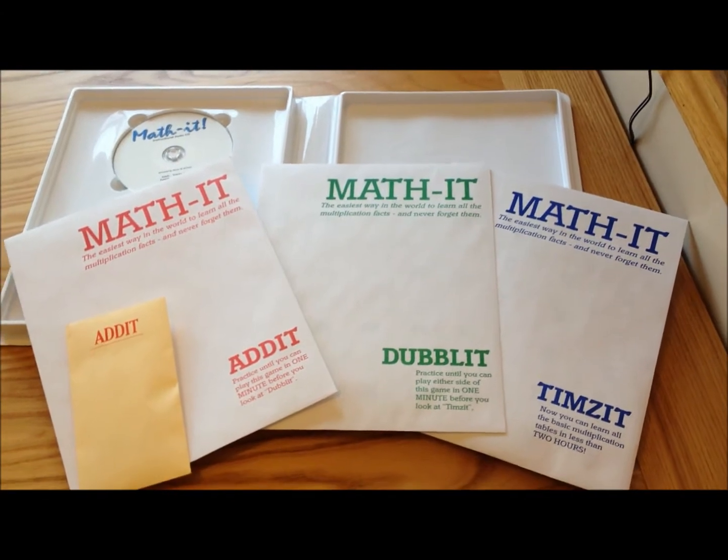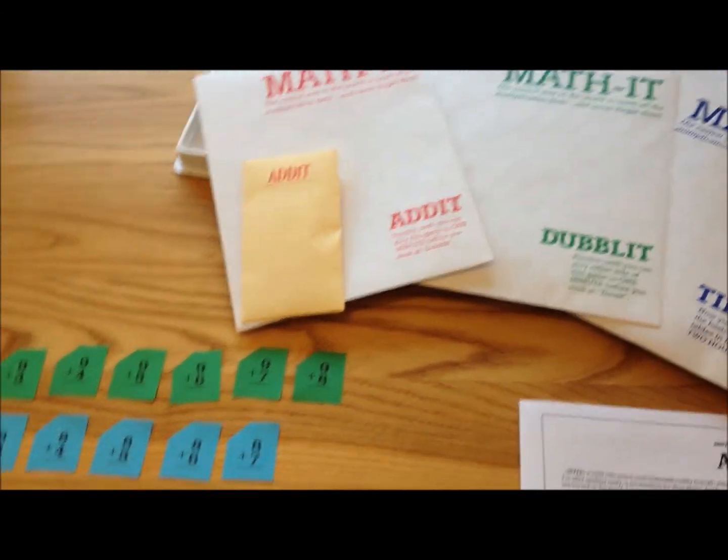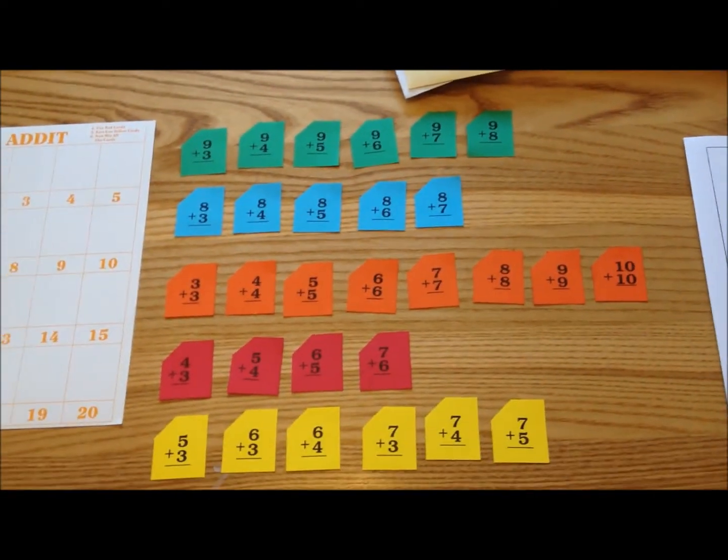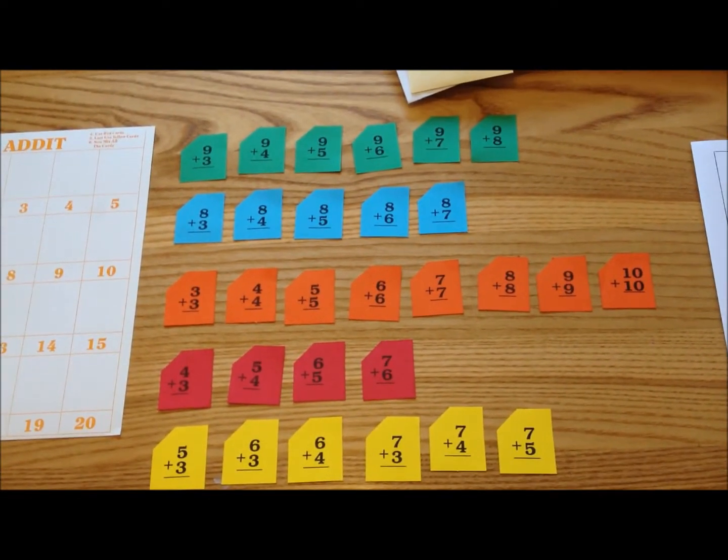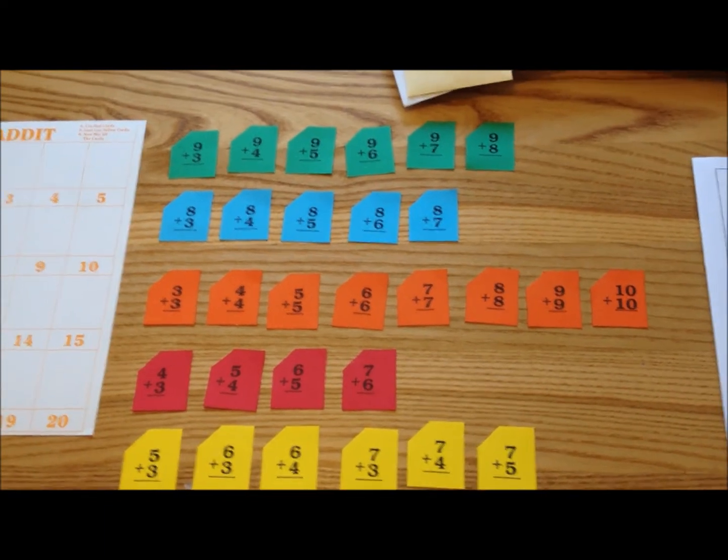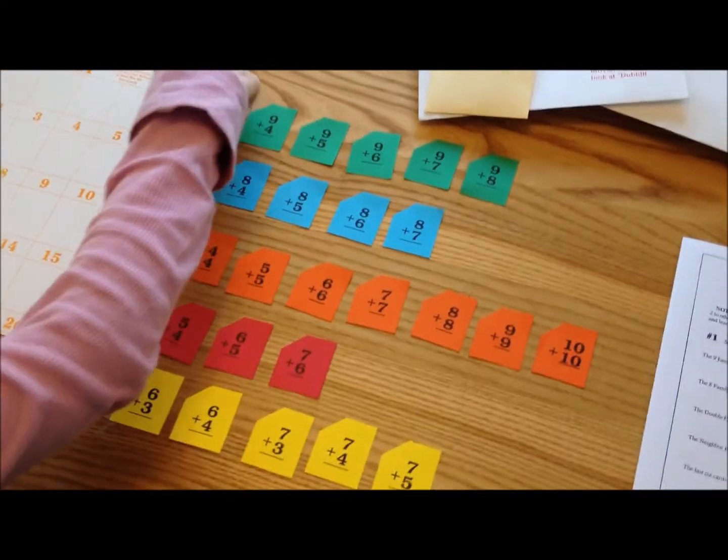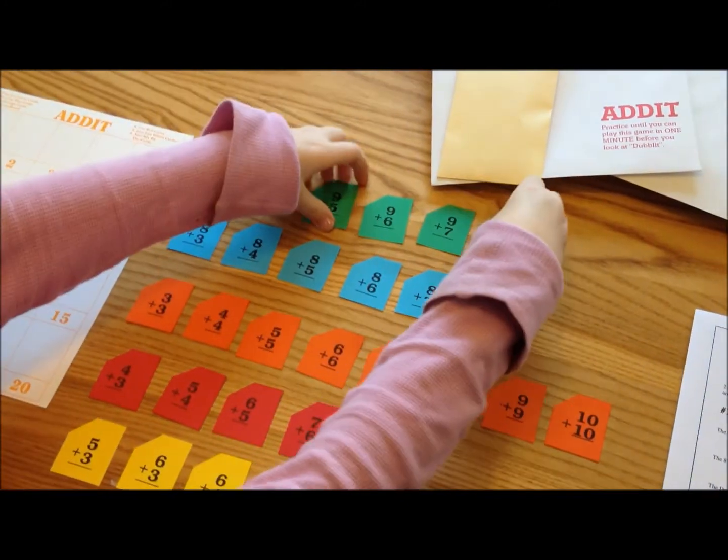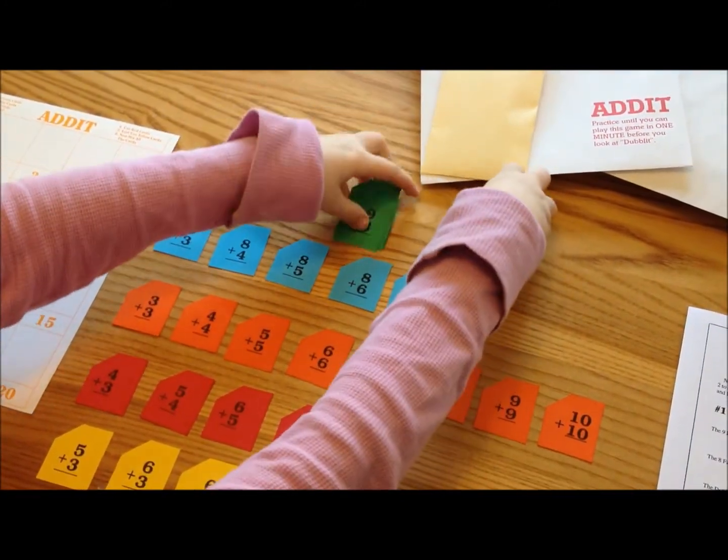Now we have several different cards. We have the green cards, blue, orange, red, and yellow. So first Abby is going to pick up the green cards. We just have them laid out here so I can show you all of them, but they shouldn't be in an order.